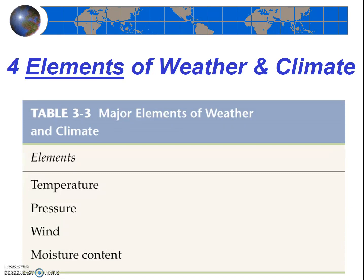The four major elements of weather and climate, which you need to know, are temperature, pressure, wind, and moisture content. Later in the course, we'll be going over each of these in much more detail.